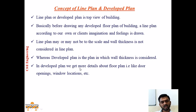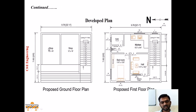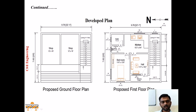In the developed plan we get more details about the floor plan like door openings, window locations, etc. A detailed opening schedule is necessary and can be seen in the developed plan, whereas such is not the case for line plan. Here you can see a proposed developed plan where at the basement or ground level shops are proposed and above that a 1 BHK house is provided. Various wall thicknesses and furniture requirements are shown, and column positionings are indicated.